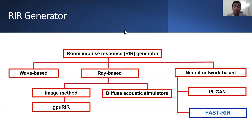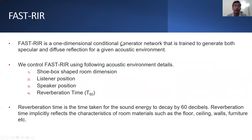In our work, we propose a neural network-based fast RIR architecture that can be directly controlled using conventional environmental parameters. Fast RIR is a one-dimensional conditional generator network trained to generate both specular and diffuse reflections for a given acoustic environment. We control fast RIR using the following acoustic environmental details: shoebox-shaped room dimensions, listener position, speaker position, and reverberation time.